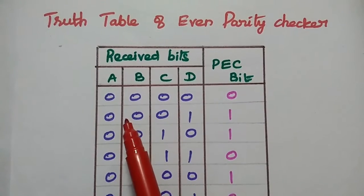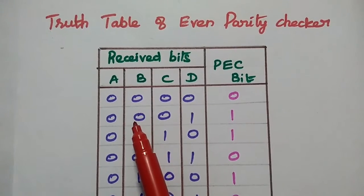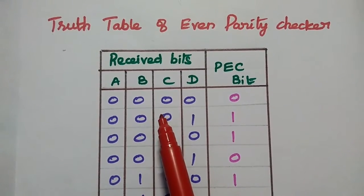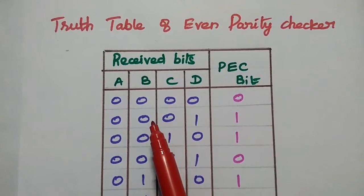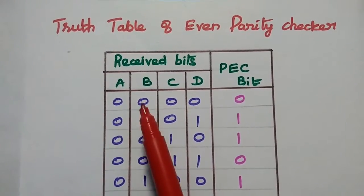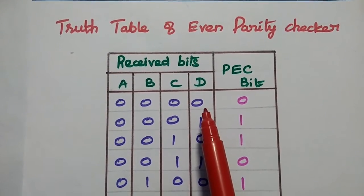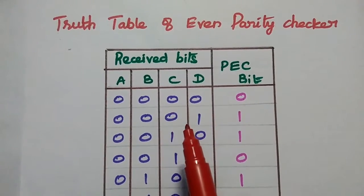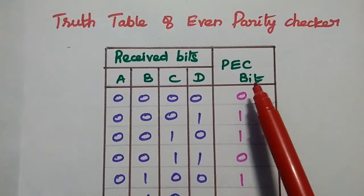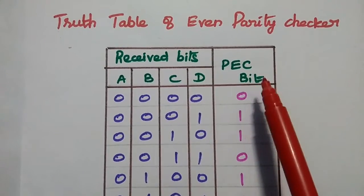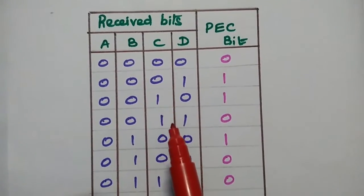Let's consider the truth table of even parity checker. At the transmitter side, we transmit the original binary information along with the parity bit. The original binary information has 3 bits: A, B, C. The fourth bit represents the parity bit. At the receiver side, we receive 4 bits. PEC represents the parity error check bit. For 4 bits, we can have 16 combinations.